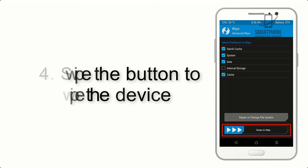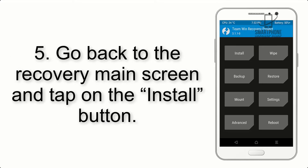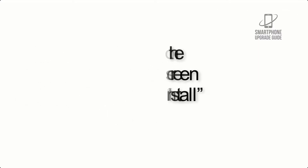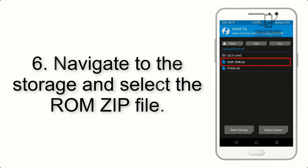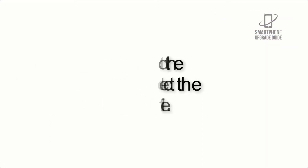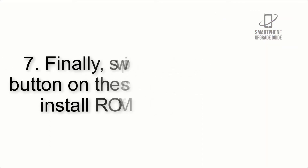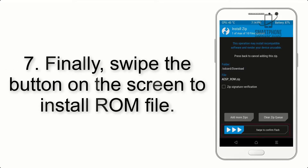Step 4: Swipe the button to wipe the device. Step 5: Go back to the recovery main screen and tap on the Install button. Step 6: Navigate to the storage and select the ROM zip file.